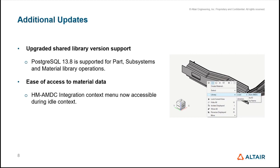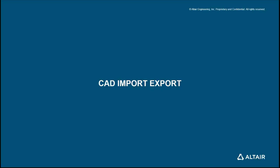The next update is ease of access to material data. In the last release, we introduced HM-AMDC integration via context menus, but that was only exposed in the graphics. Now we have brought it out and are also supporting it in the idle context. If you select a material and select a part in your graphics, you can see Library Load from AMDC, which takes you to the AMDC page where you log in and download the material. This is another small but significant enhancement, and that concludes model build related updates.